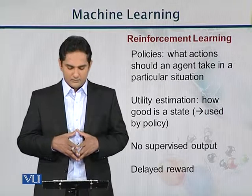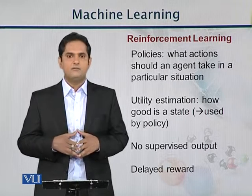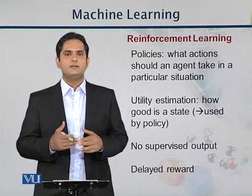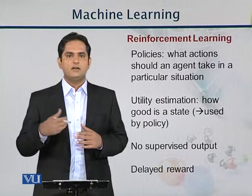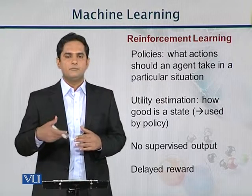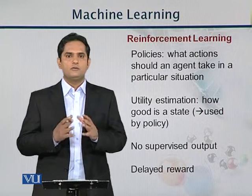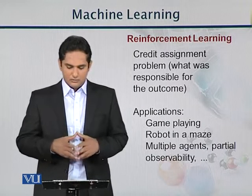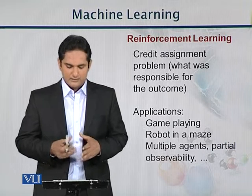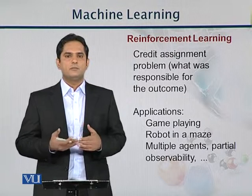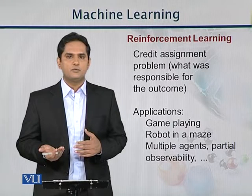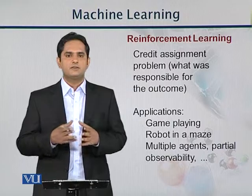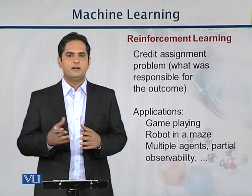Reinforcement learning has no supervised output and involves delayed reward — the result will be delayed because the feedback is being used to improve results, and the final result comes later. An example is the credit assignment problem, which deals with identifying which customer is at risk of bankruptcy.